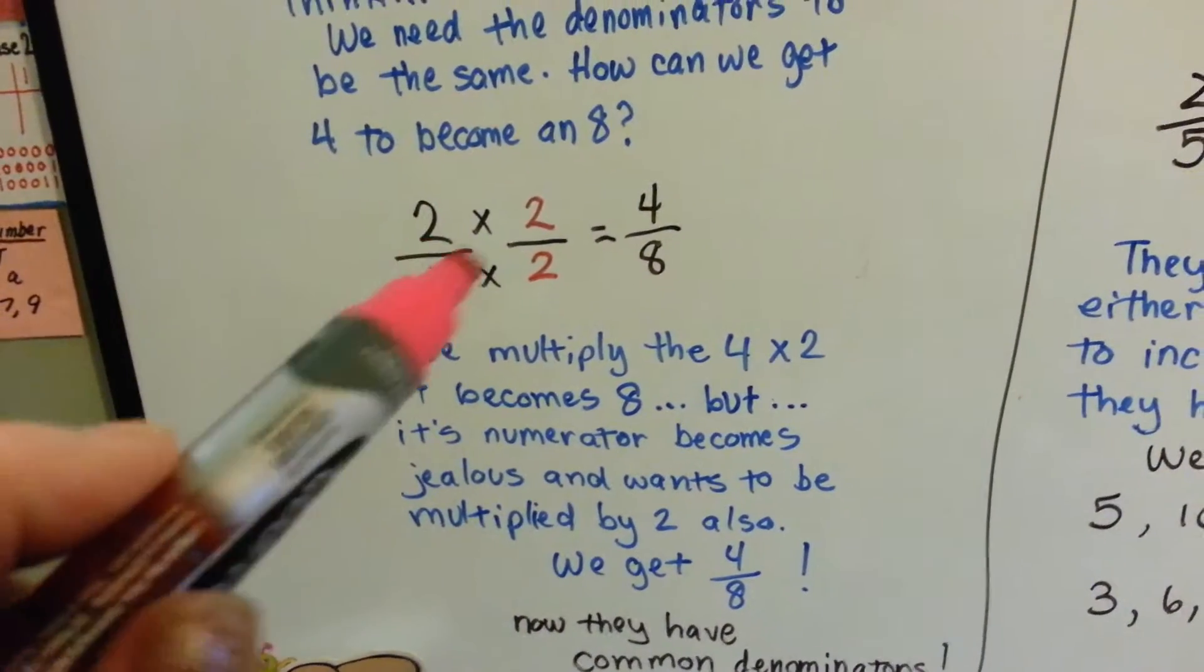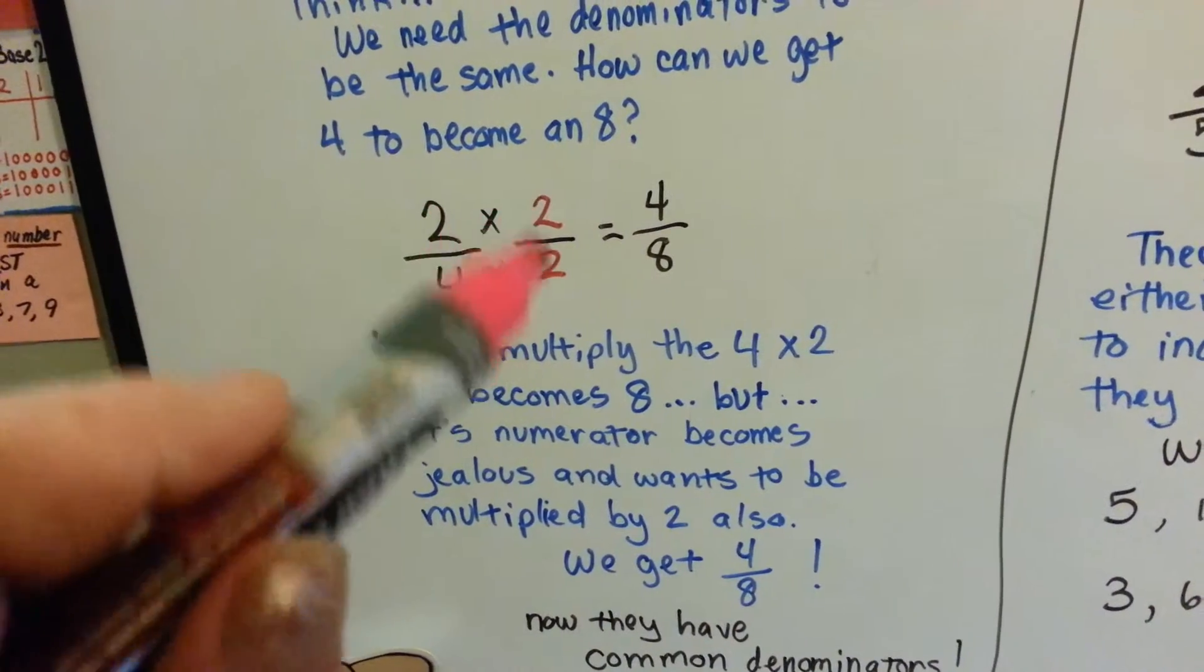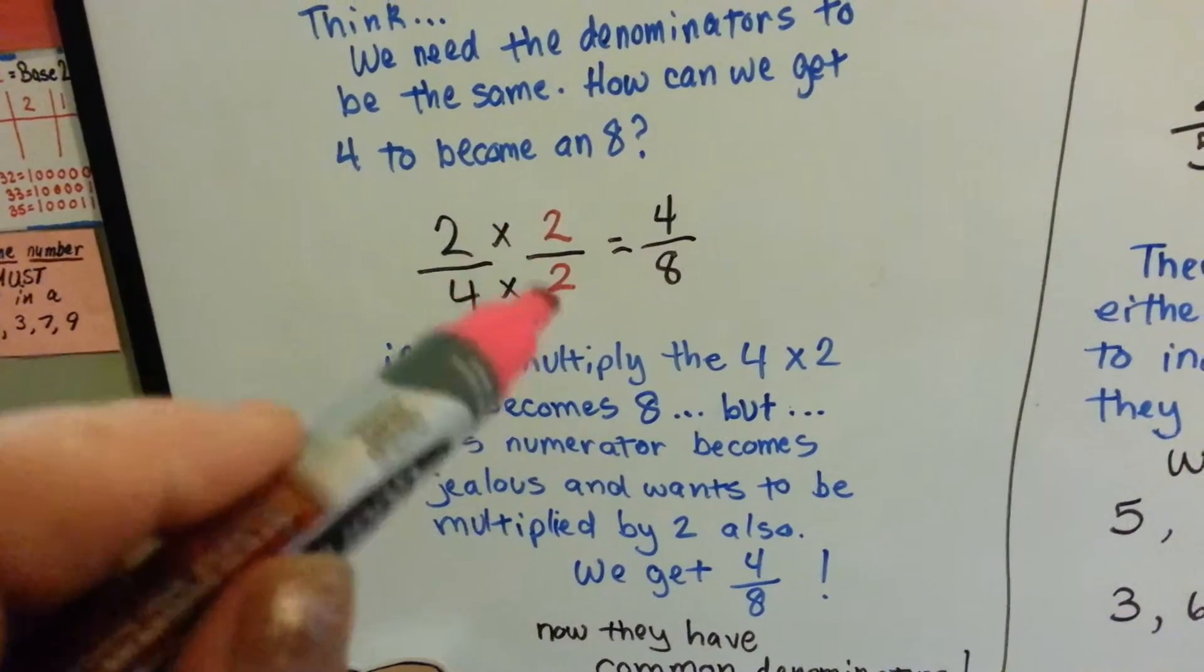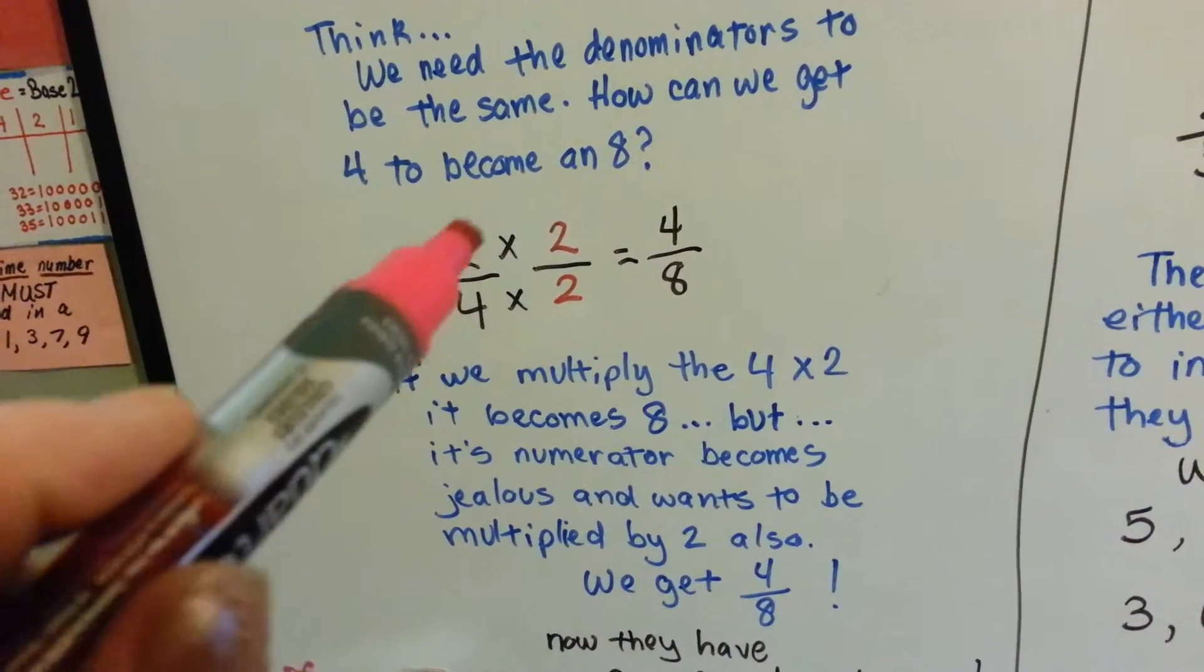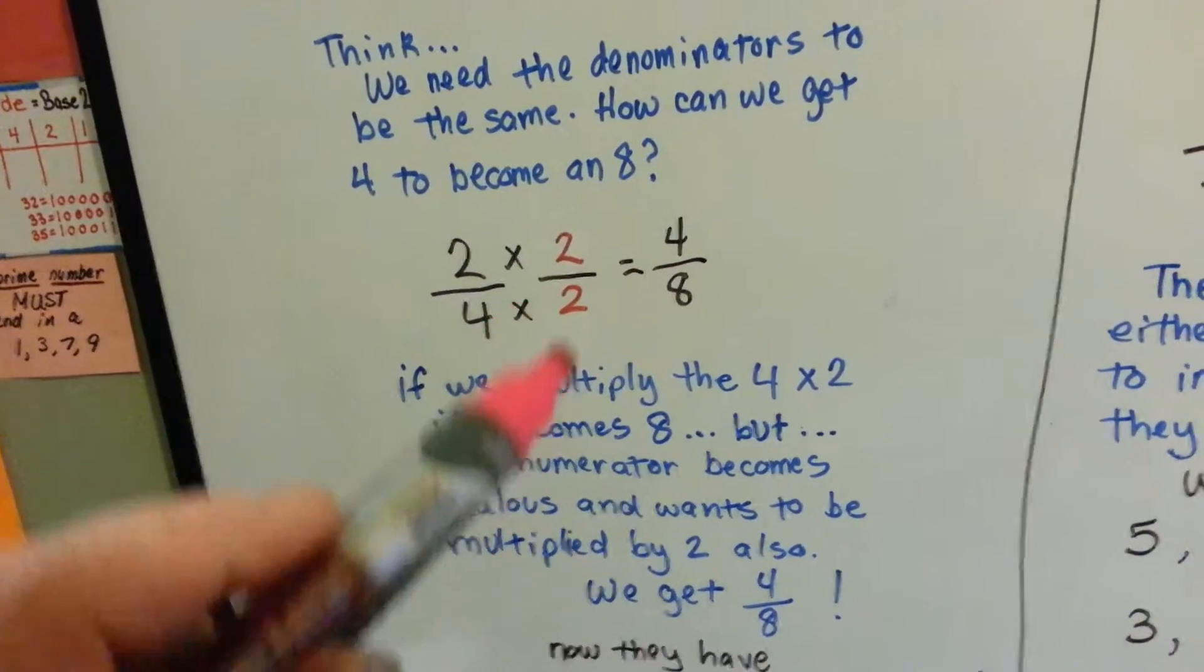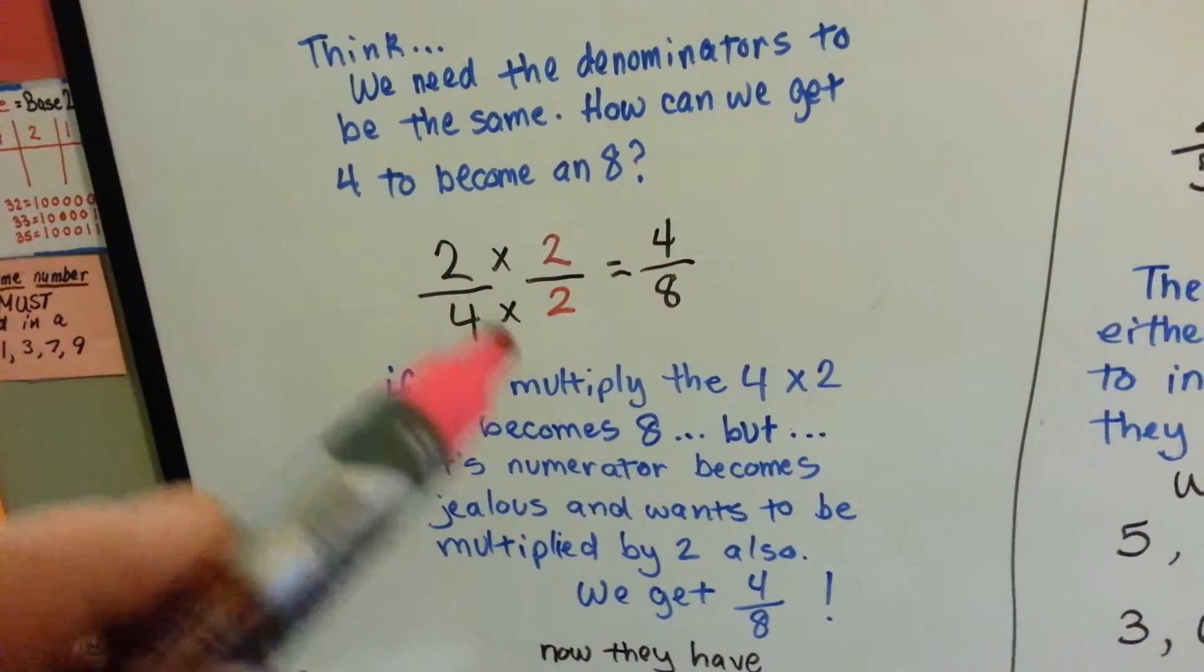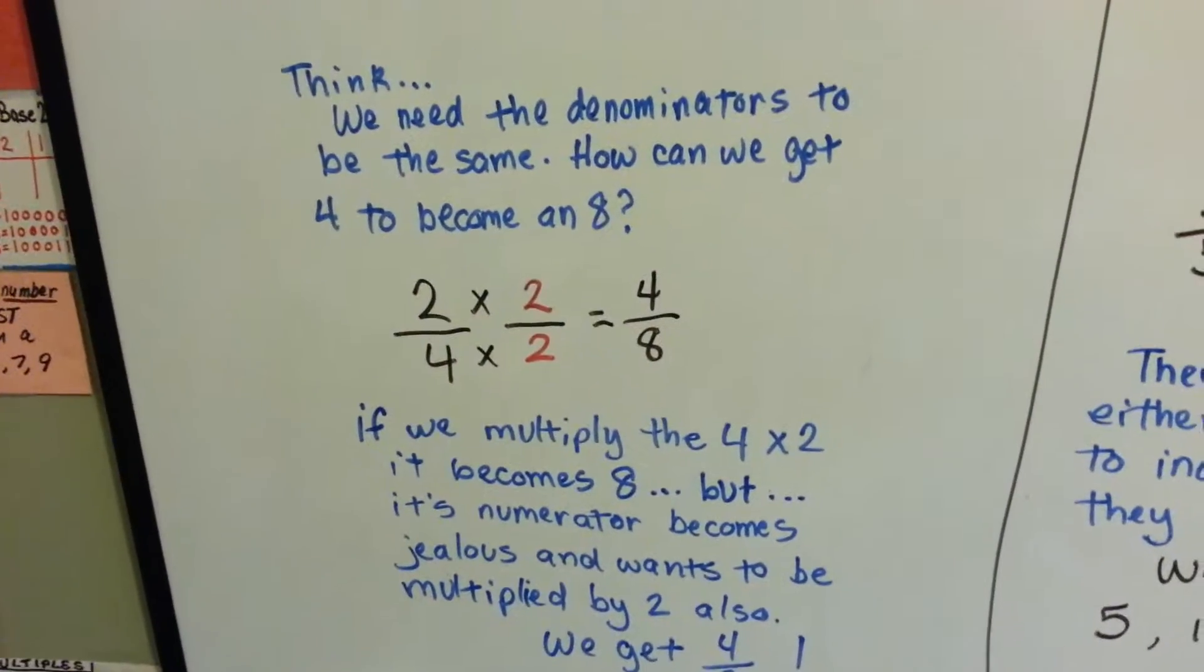So the 2 fourths is now 4 eighths. We multiplied the top and the bottom, the numerator and denominator, by the same number. The 4 became an 8, but then the 2 is jealous. It got multiplied by 2, and now it's a 4. 4 eighths is the same as 2 fourths. They're equivalent fractions.